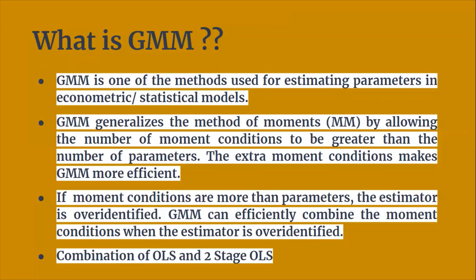GMM generalizes the method of moments by allowing the number of moment conditions to be greater than the number of parameters. The extra moment conditions make GMM more efficient. So if moment conditions are more than parameters, the estimator is over-identified, and GMM can efficiently combine the moment conditions when the estimator is over-identified.